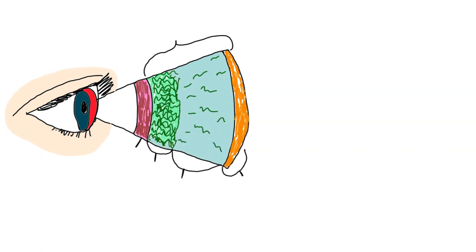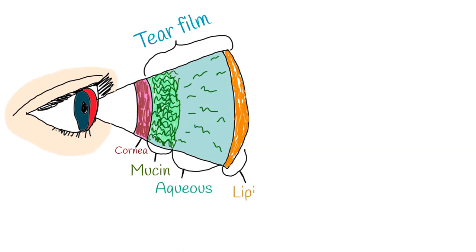The main mechanism of dry eye is loss of homeostasis of the tear film, which causes physical symptoms. The tear film is approximately 2 to 5 micrometers thick over the cornea and is composed of three main components — lipid, aqueous, and mucin — often described as layers.